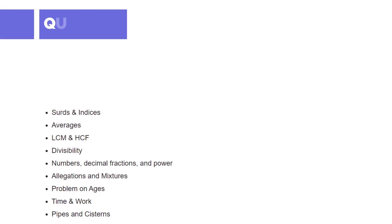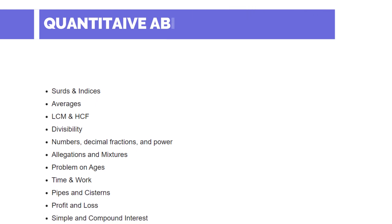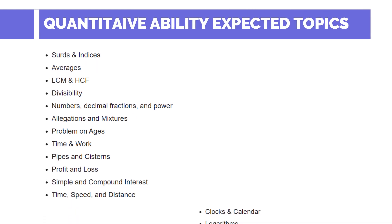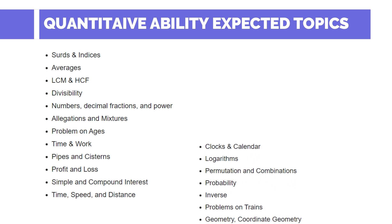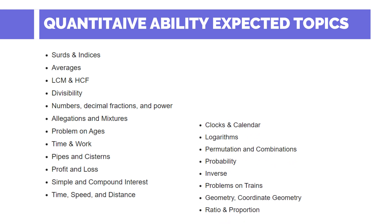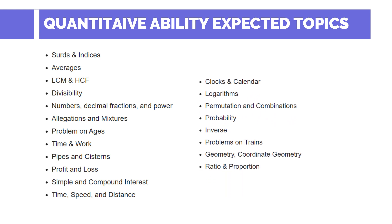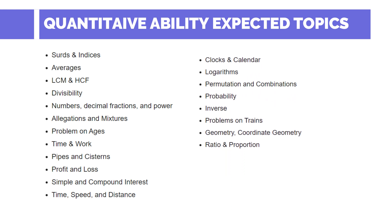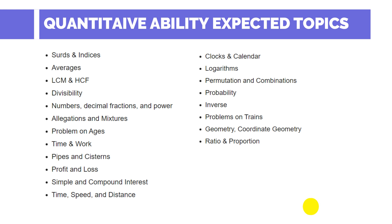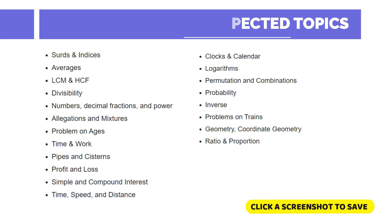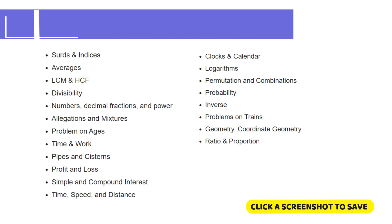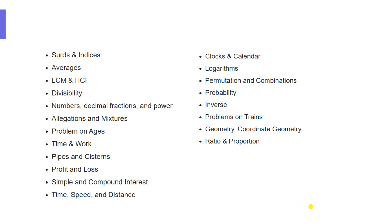For Quantitative Ability, topics include surds and indices, averages, LCM, HCF, divisibility, number theory, decimal fractions, allegations and mixtures, problems on ages, time and work, pipes and cisterns, simple and compound interest, logarithms, permutations and combinations, geometry, ratio and proportions, and algebra.